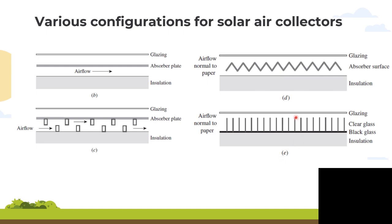Configuration E is the double absorber plate collector. This design has two layers — a clear glass and a black glass layer — with air flow in between them. The black glass acts as an absorber to capture solar energy, and air passes between the two glass layers. This type of design is used to improve efficiency by providing an additional heat-absorbing surface. In all these configurations, glazing is used to reduce heat losses by radiation and convection, and wall insulation at the bottom minimizes heat loss from the back side of the collector.